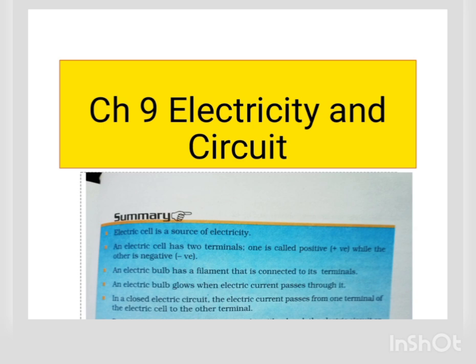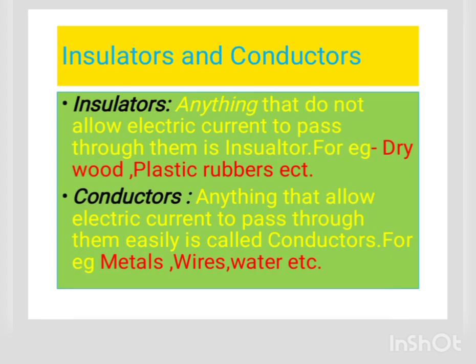Let's revise what insulators and conductors are. An insulator is anything that does not allow electric current to pass through it. Examples of insulators are dry wood, plastic, rubber, and plastic gloves — these do not pass current through them.